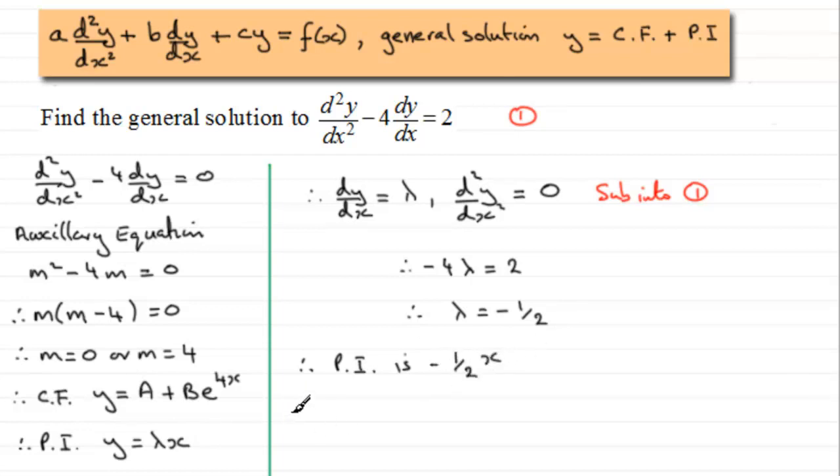And so therefore, the general solution, we'll just write this in, the general solution is going to be y equals the complementary function, which is a + be^(4x), plus our particular integral, which is -1/2 x.